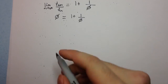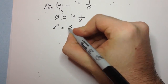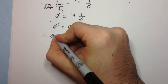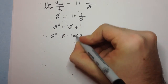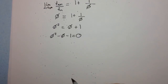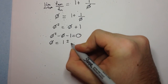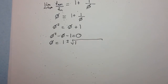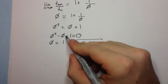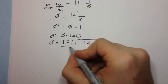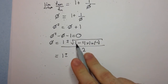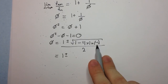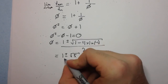Now we just have to solve this for phi. Multiplying everything by phi gives phi² = phi + 1. Moving terms to the other side gives phi² − phi − 1 = 0, and we can use the quadratic formula. So phi = (1 ± √(1 + 4)) / 2 = (1 ± √5) / 2.